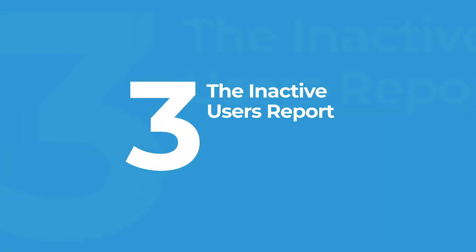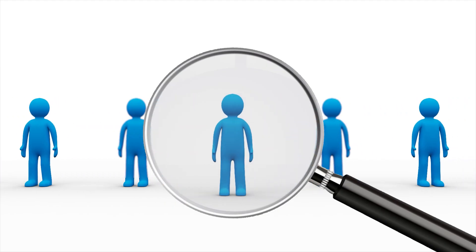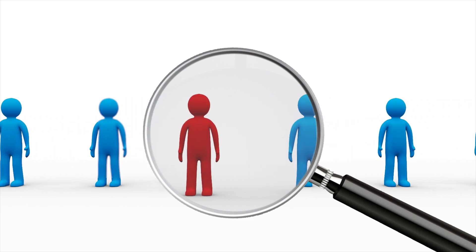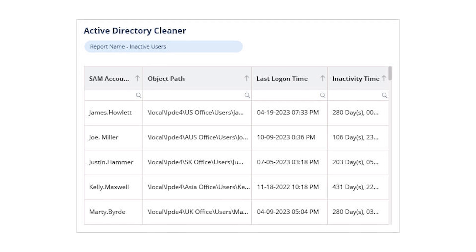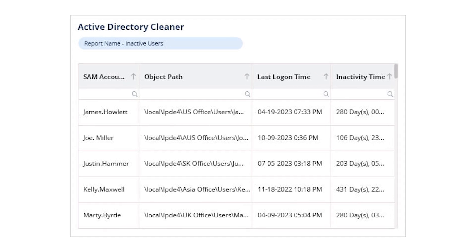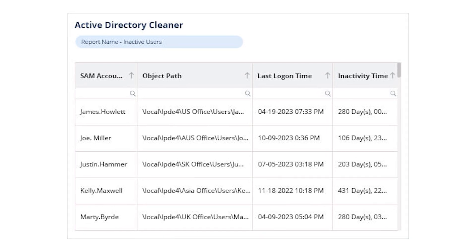Inactive users. Old accounts are low-hanging fruit for attackers. Lapide helps you find inactive users — people who have left the company or haven't logged in for months — and take action. You can disable, delete, or move them automatically to keep your environment clean and secure.